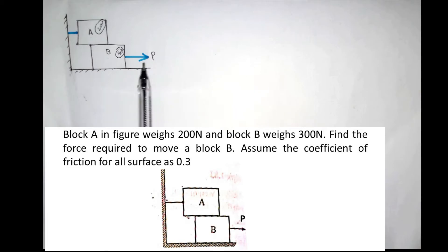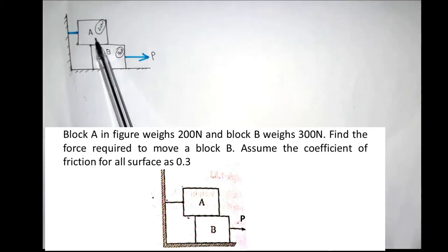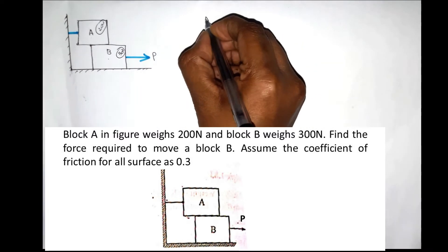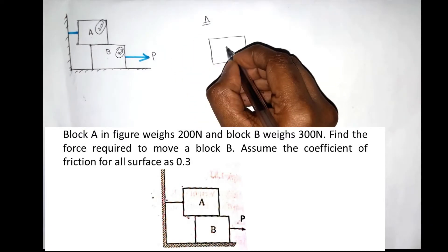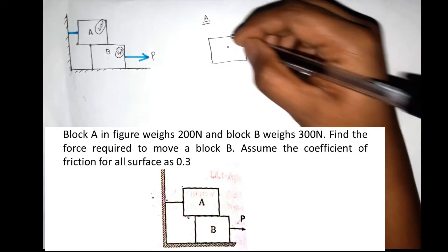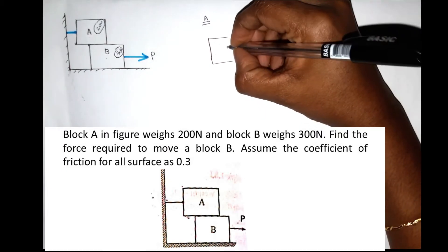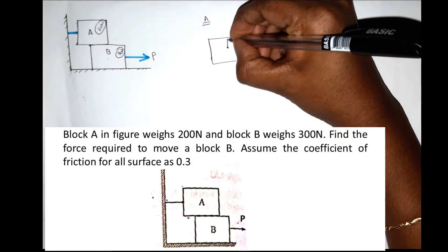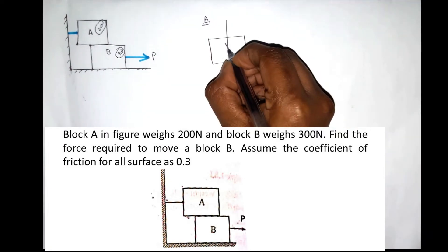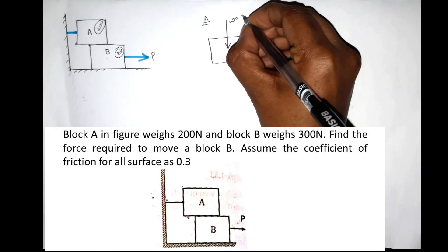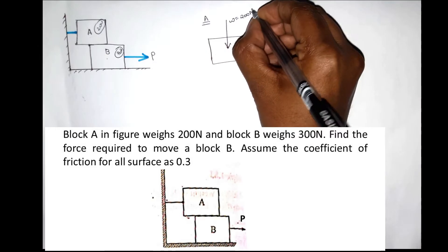We can do this by separating one block at a time — we start with Block A. Block A has a weight of 200N acting vertically downward.